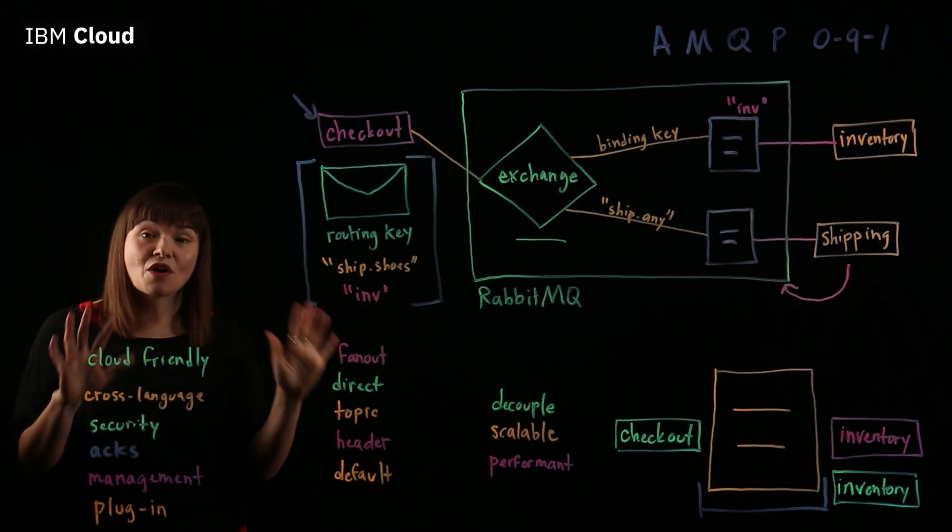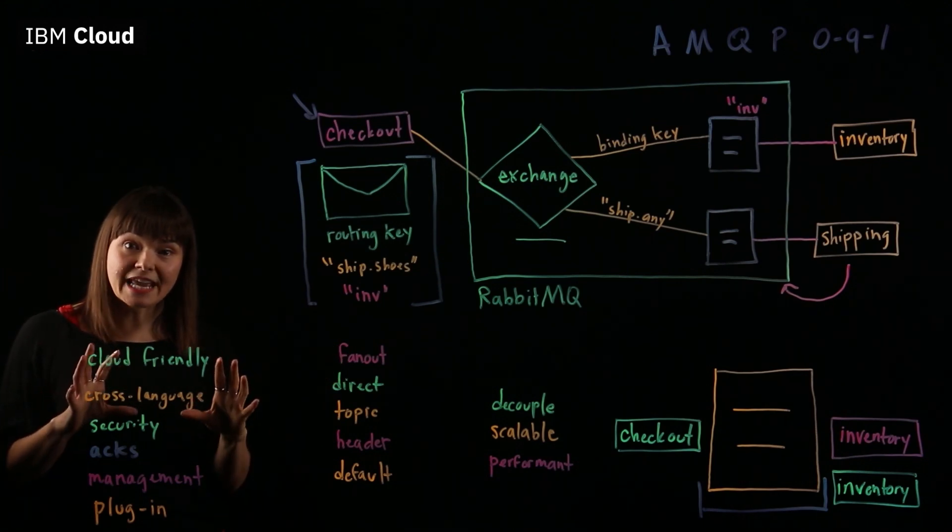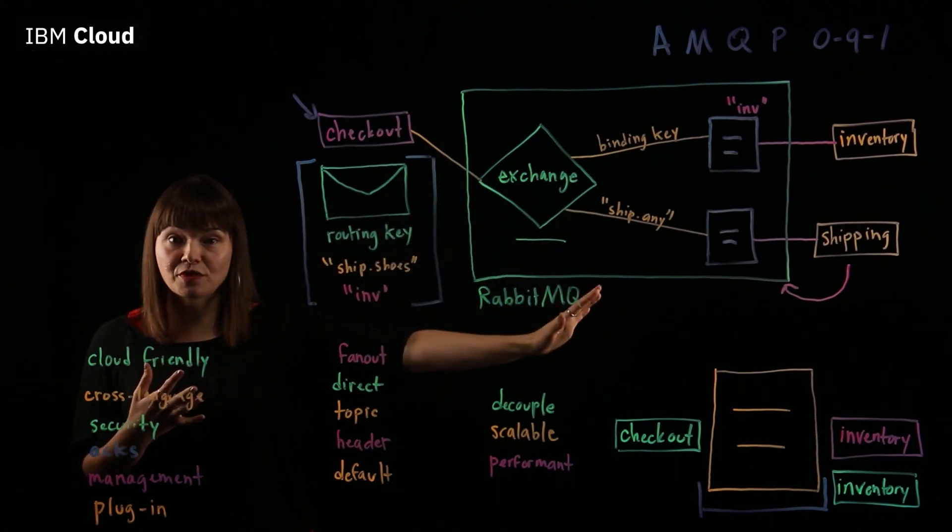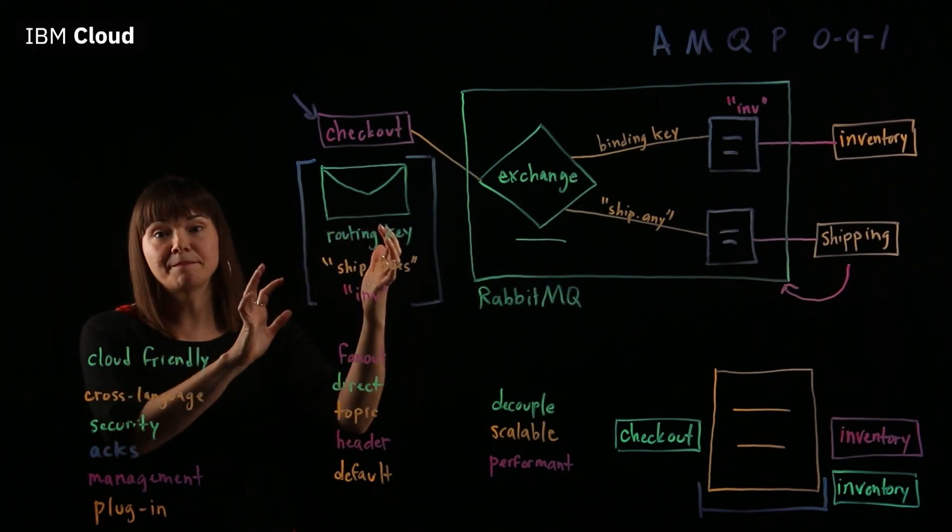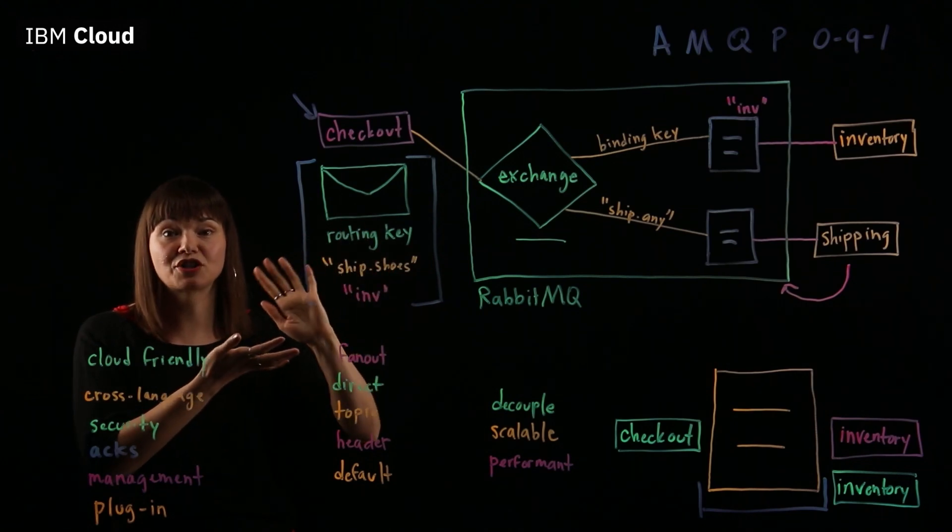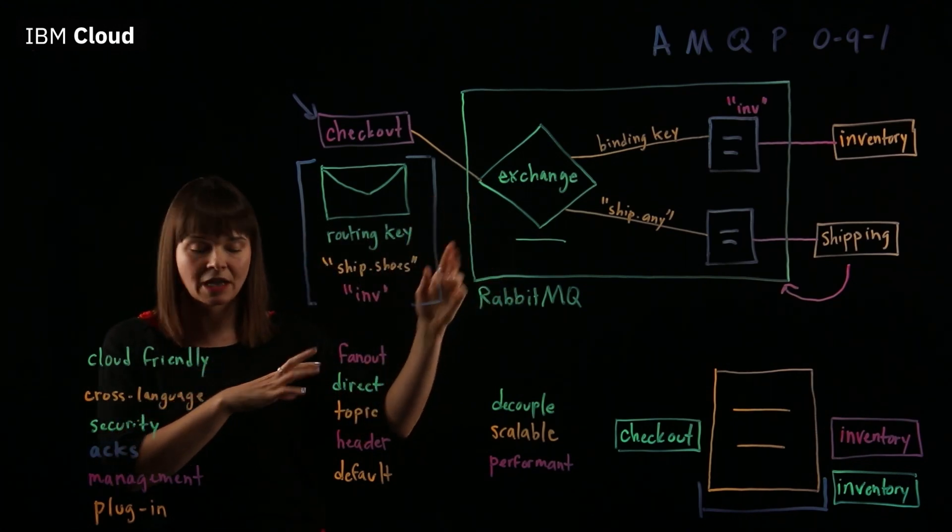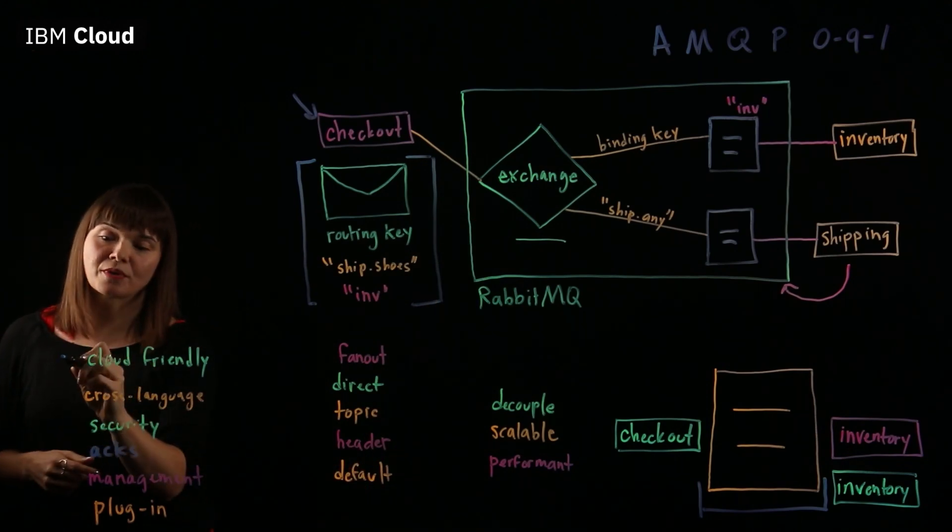So this has been an overview of RabbitMQ. The big takeaways for you are the flexibility with the ways the messages move through the system. The fact that the message metadata defines how messages move through the system, as opposed to the cluster, the broker administrator. And then it's also super cloud friendly.